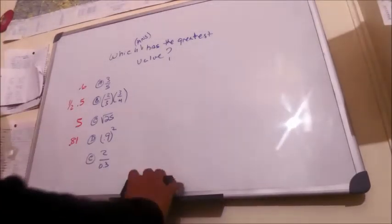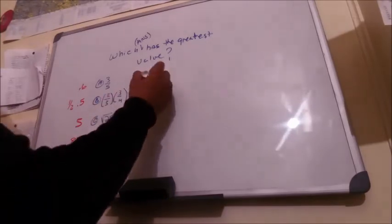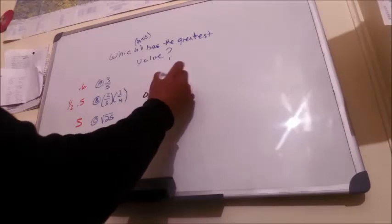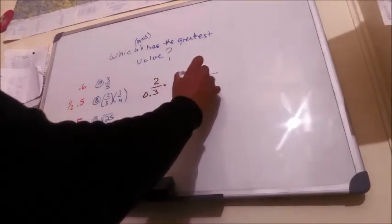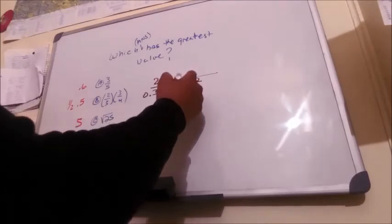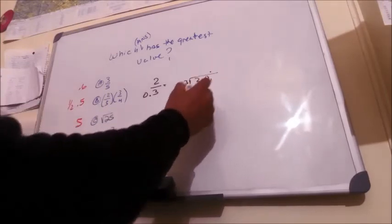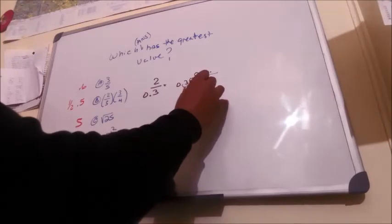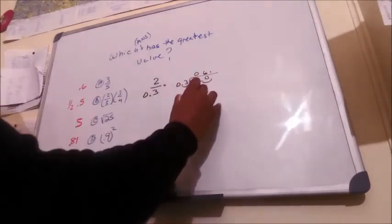Last but not least, I see a surprise but I won't spoil it. 2 over 0.3, or 2 divided by 0.3. This decimal has to come over, so we'll send that decimal over.